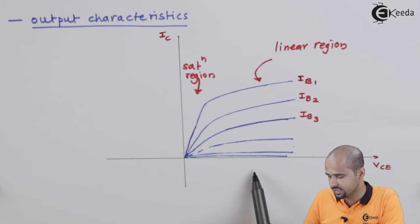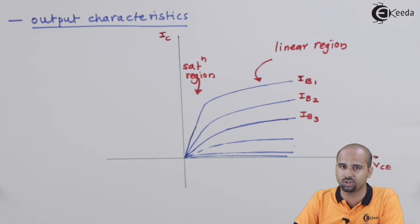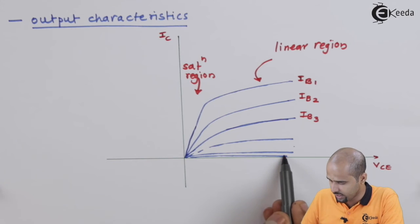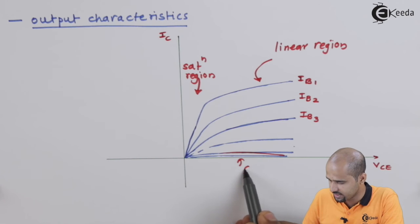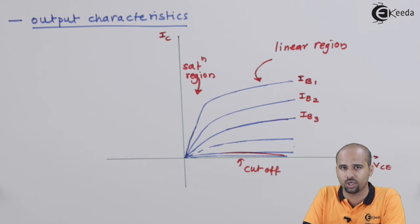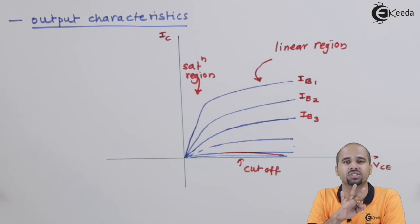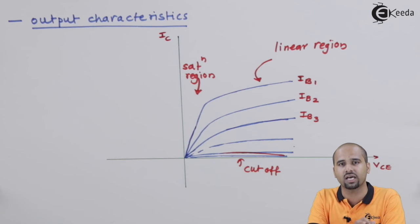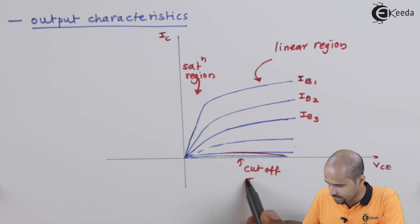The third region is the cutoff region, where even if we increase the voltage Vce, we do not get a significant increase in current. So in this region the current is very low. To summarize the three regions of BJT operation: linear region, saturation region, and cutoff region. In the cutoff region current is low; in saturation voltage is low; in the linear region both are moderate with respect to each other.